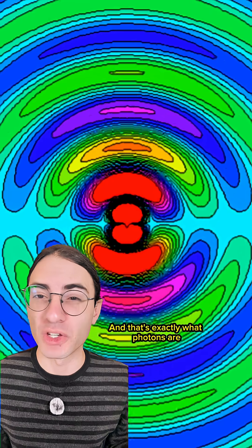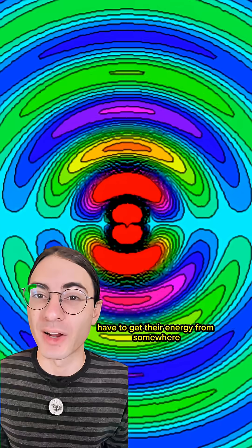And that's exactly what photons are. They're what happens when the electromagnetic field rings. Those photons have to get their energy from somewhere, and it's precisely from the stored energy of the original twists.